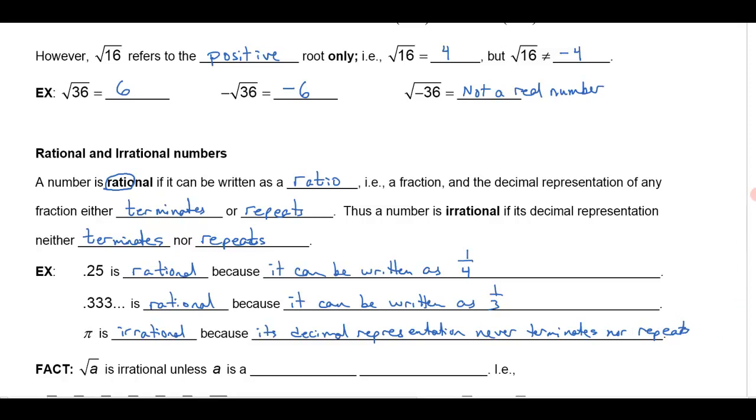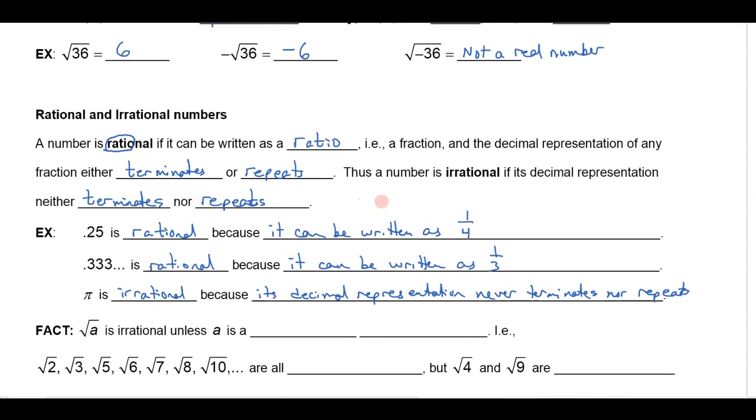So the last thing we want to talk about, since we're talking about rational numbers and square roots, is it turns out that the square root of any number is going to be irrational. And so when you plug it into your calculator to find the square root of any number, it's going to give you a bunch of decimals that neither terminate nor repeat. Unless a is a perfect square.